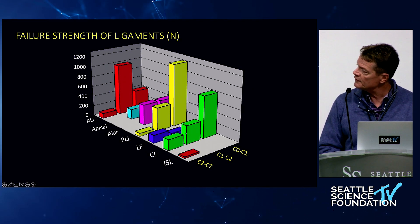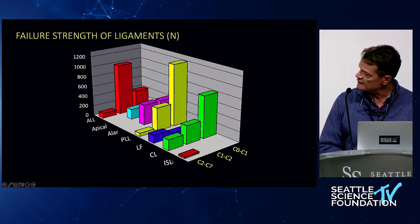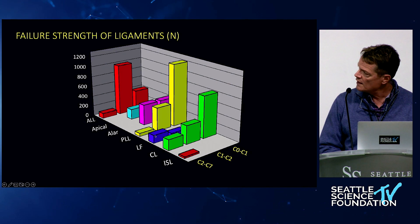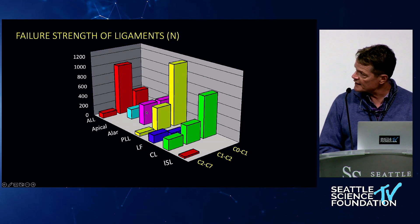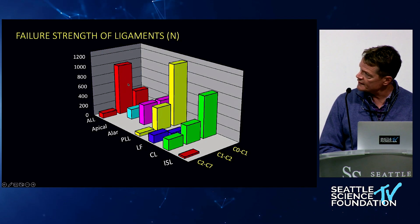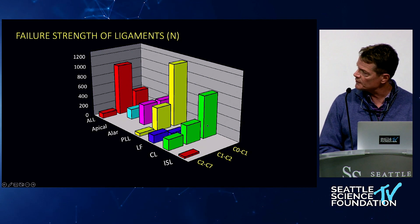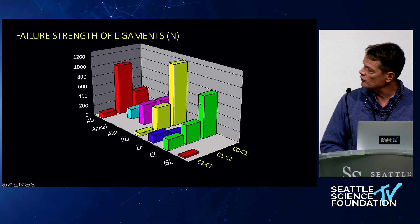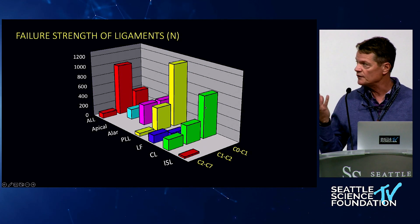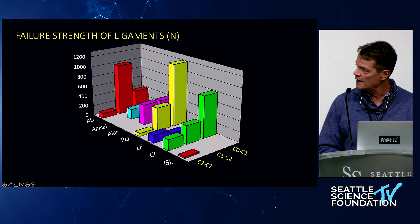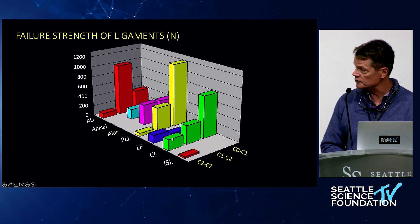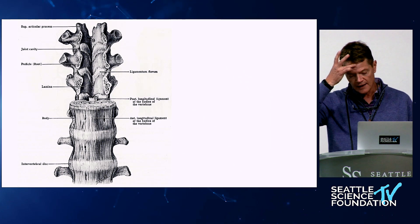Looking at the axial spine, the C2-C7 ligaments pale in comparison to the atlanto-axial complex, where the strongest ligament is the anterior longitudinal ligament. At the occipital-cervical junction, the strongest is the posterior longitudinal ligament — equivalent to the tectorial membrane — followed closely by the occipital condylar ligament. In the subaxial spine, the major players are ligamentum flavum and the capsular ligaments.